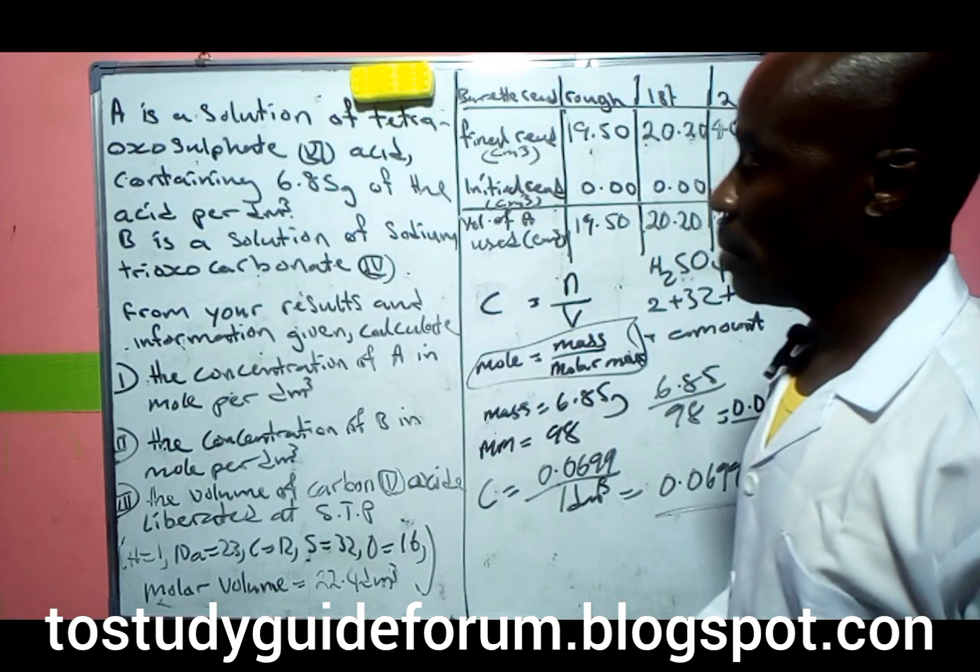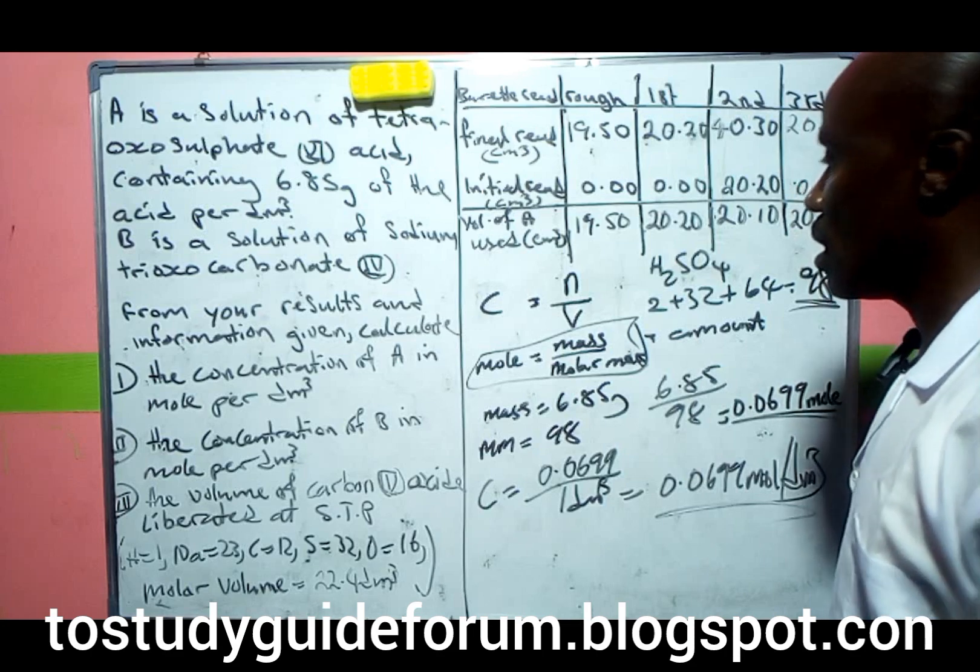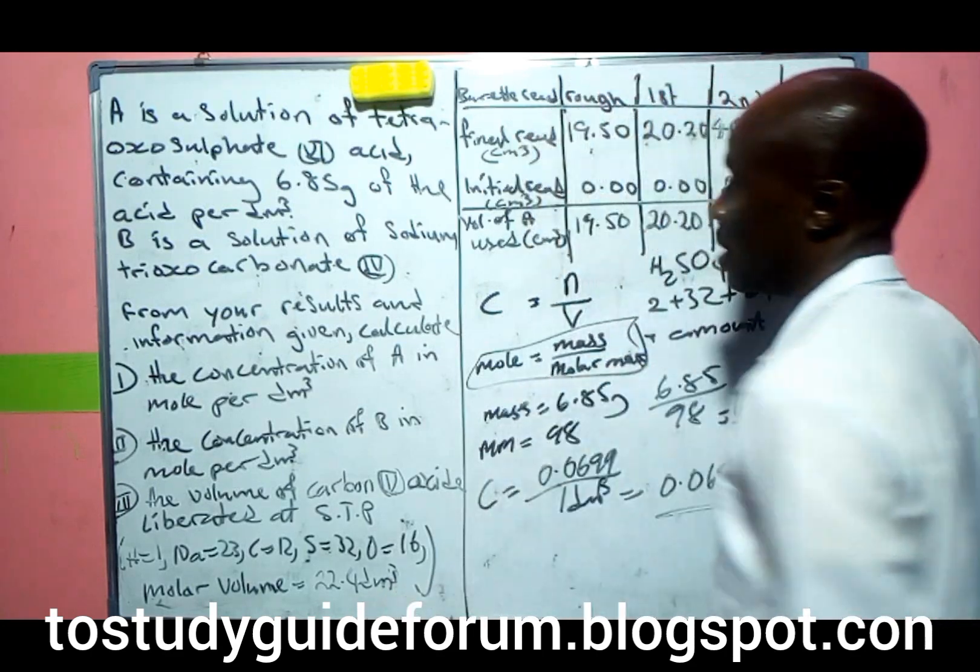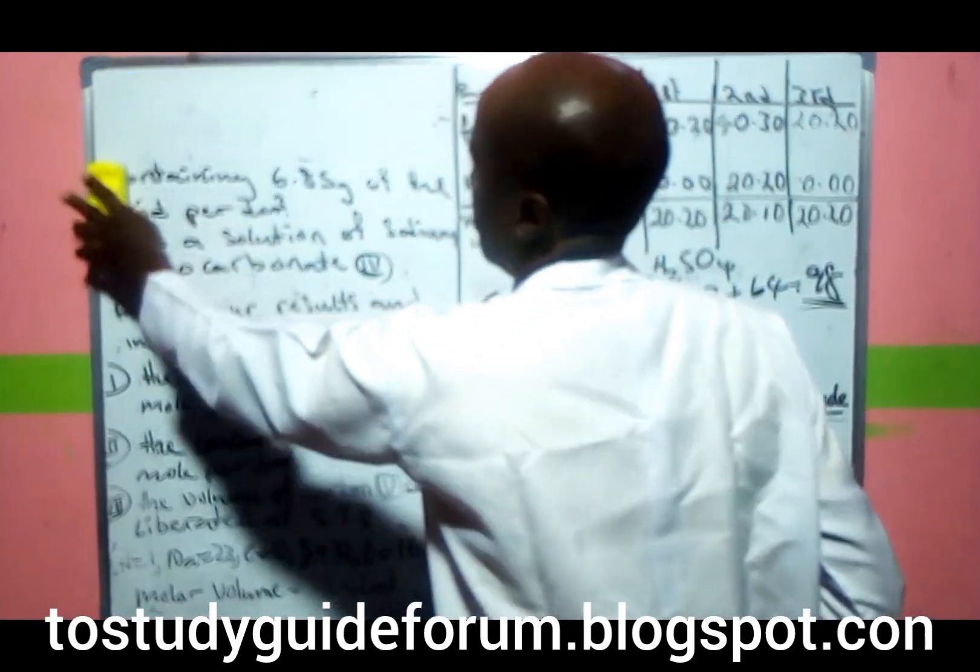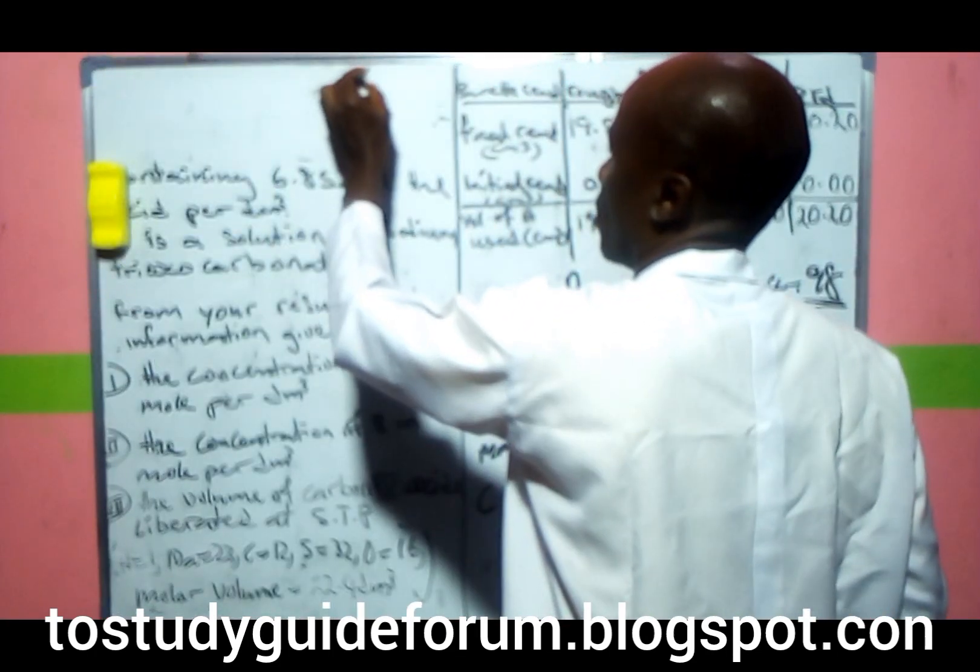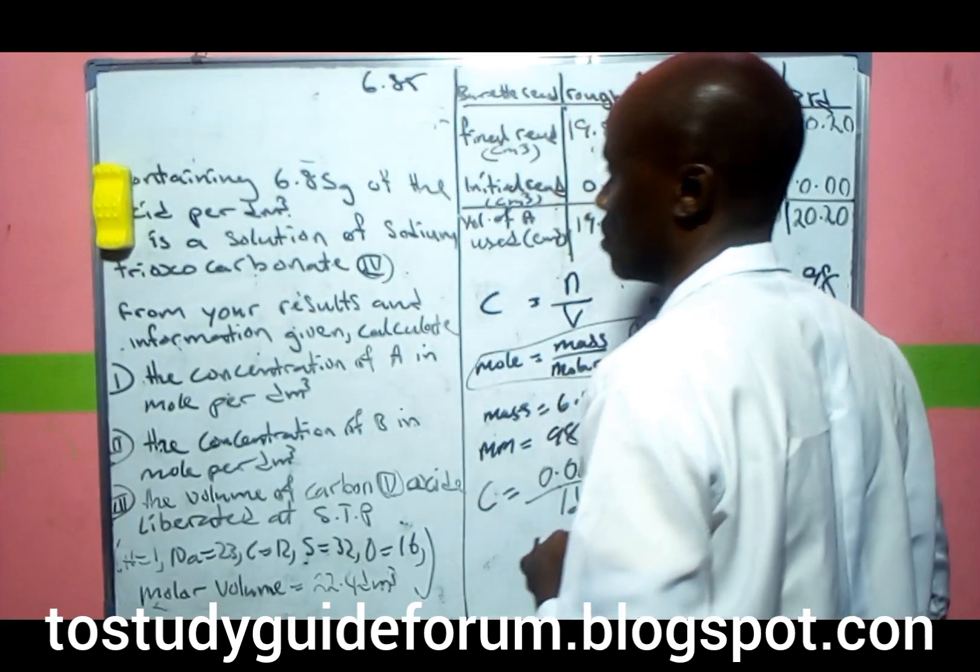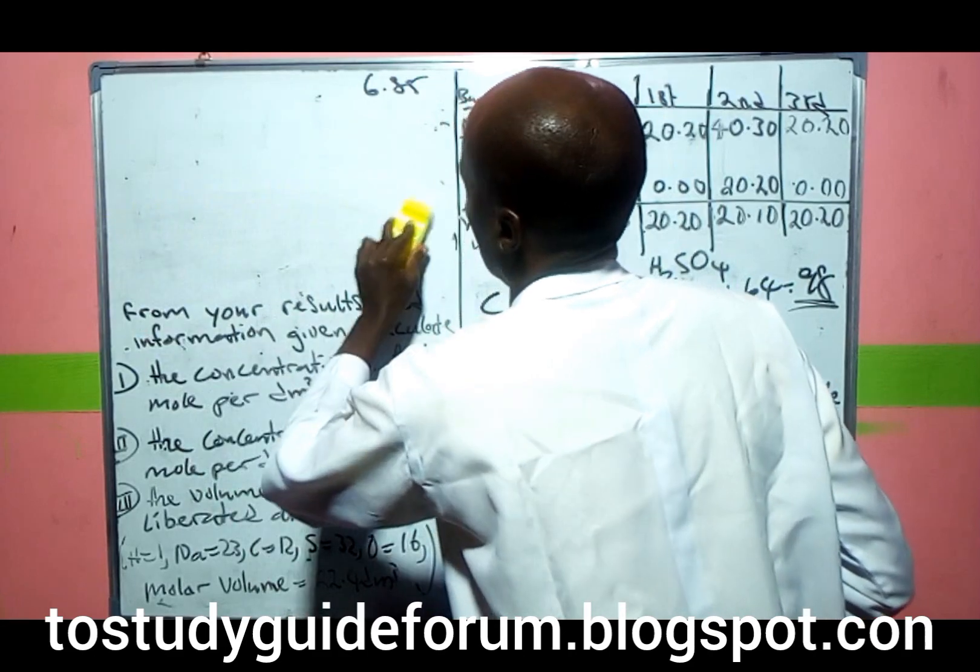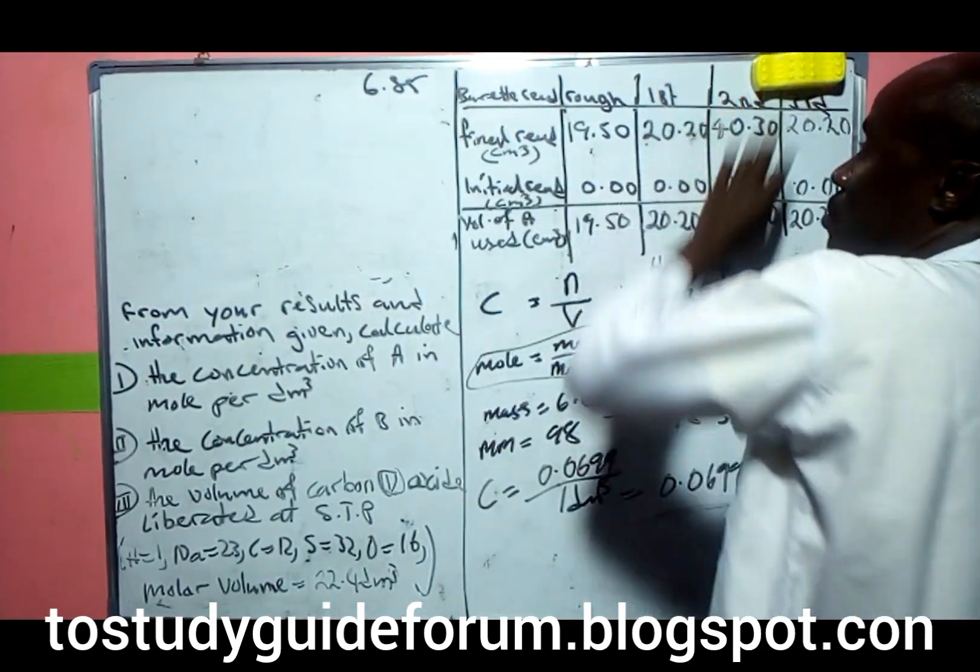Next, we calculate the concentration of B in mol per dm³. Let me erase this and keep our concentration for future use.